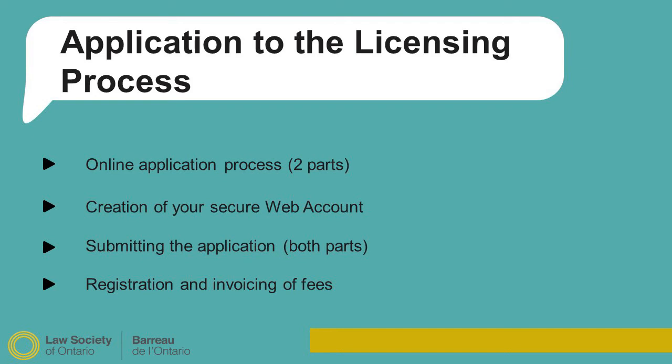The application itself is a two-part process. Part one consists of the online entry of your information and payment of the application fee. Once that is completed, you move on to part two, which consists of the actual paper copy submission of your application. This part has to be certified before it is submitted to the Law Society's Licensing and Accreditation Department.